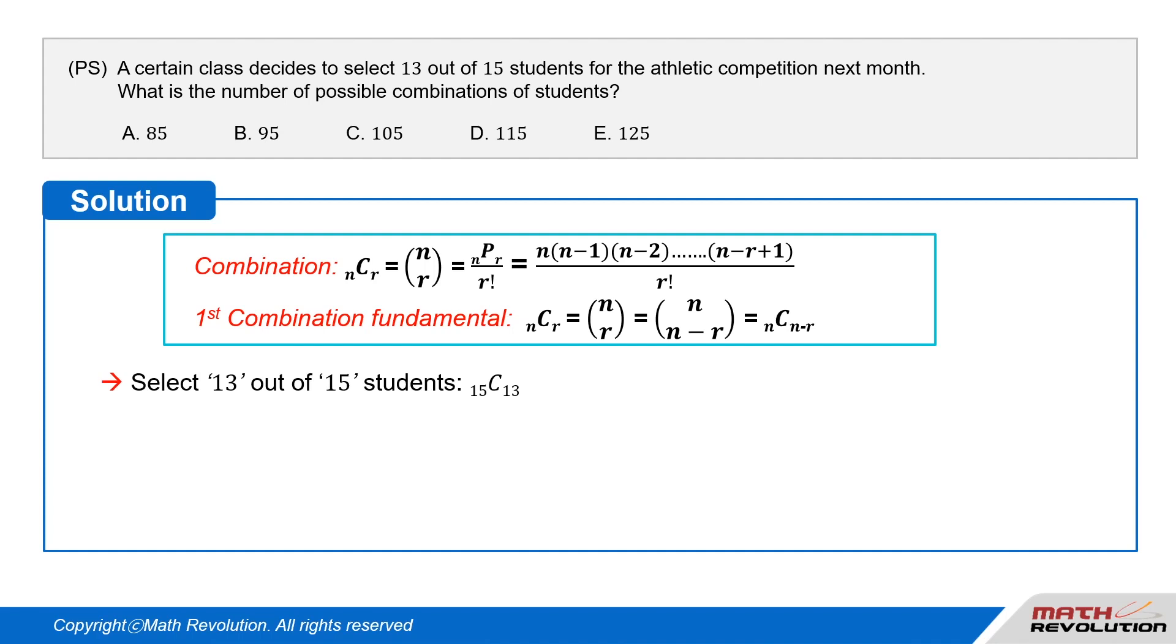We have to select 13 out of 15 students, which equals 15 choose 13. Using n choose r equals n choose n minus r, we get 15 choose 13 equals 15 choose 15 minus 13, which equals 15 choose 2.